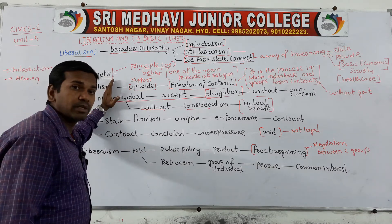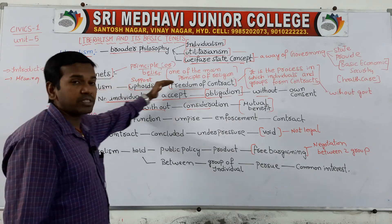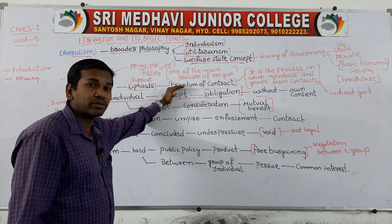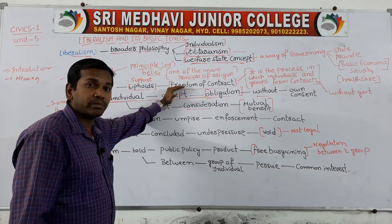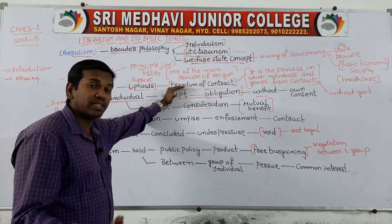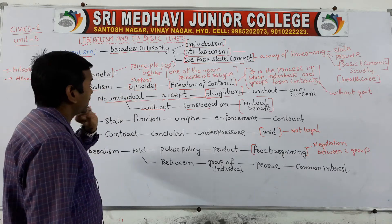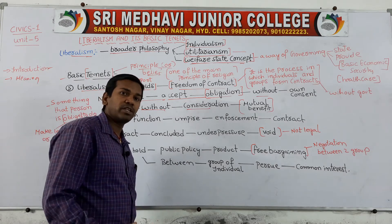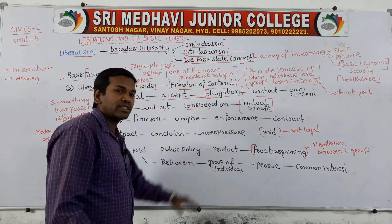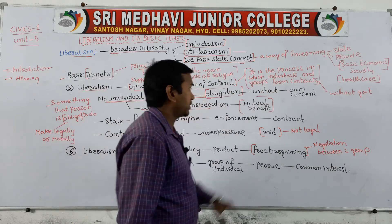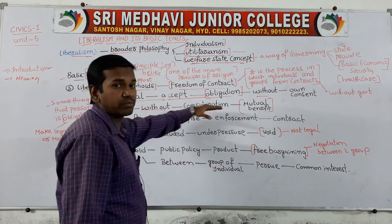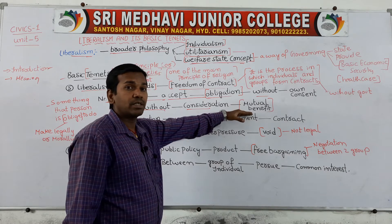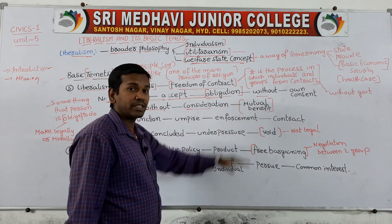Similarly, in liberalism, mainly they are supporting freedom of contract. When two parties wanted to make a contract, they can make the contract without consent of government — interference of government should be less. And no individual should accept any type of responsibility or obligations to discharge any duties because of moral or legal reasons, without their own consent or without any considerations of mutual benefits. When they get mutual benefits, then only they have to accept the consideration.